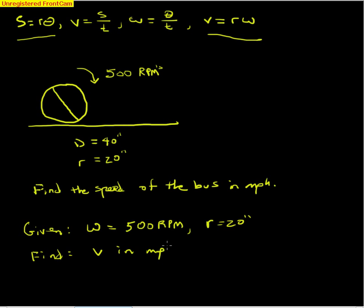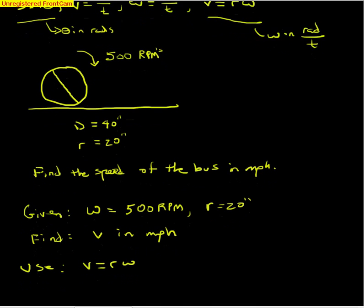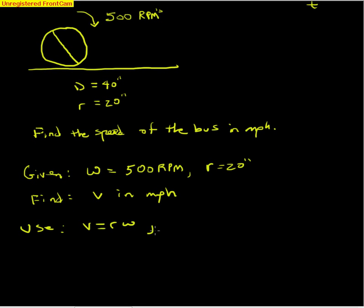The equation we'll use would be v equals r omega, since that's the three variables we're working with. But as pointed out earlier, we can't simply multiply 20 times 500, because the formula v equals r omega requires omega to be in radians per time. Theta must be in radians per unit time. So with v equals r omega, it's fine to use that equation as long as omega is in radians per unit time.